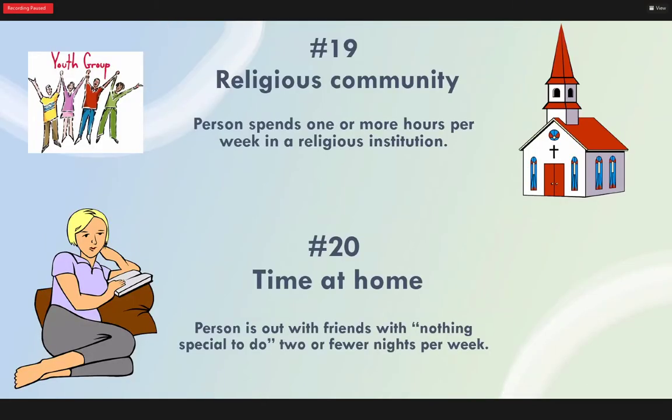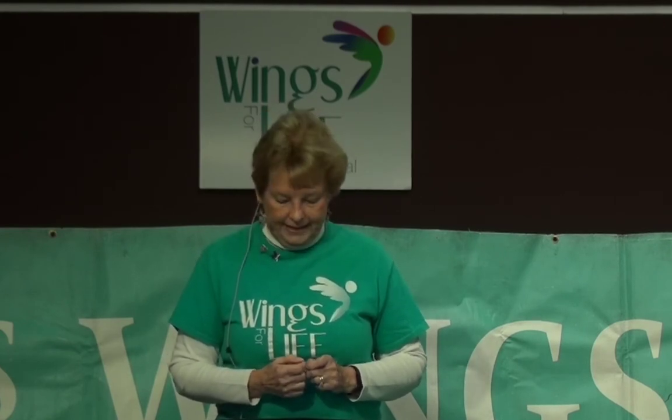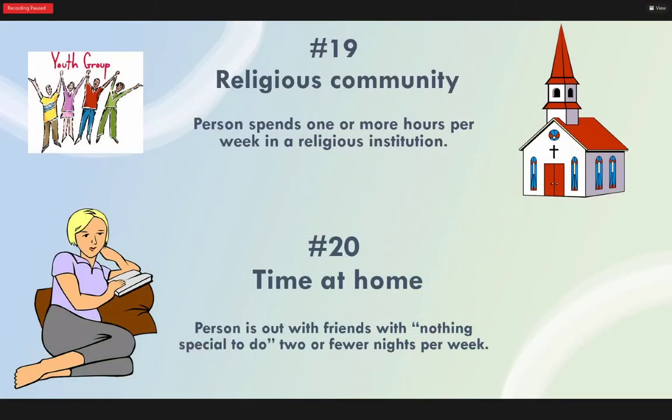Number 19 is spending time in a religious community — one hour or more a week. It doesn't matter what denomination: non-denominational Christian, Roman Catholic, Jewish, Muslim, Hindu — it doesn't matter. One hour or more a week makes all the difference in the world. That's why we encourage people to get involved in a faith community — it's one of the 40 assets. Number 20 is time at home — a person is out with friends with nothing to do two or fewer nights per week. We don't want our kids just going out with nothing to do, because they end up finding trouble.